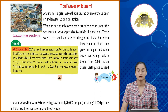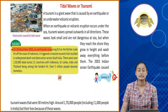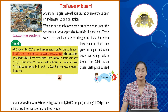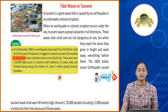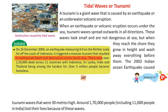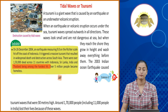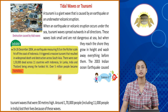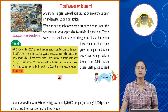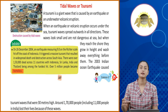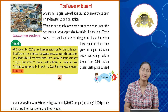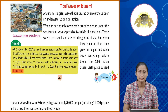Info bit: On 26th December 2004, an earthquake measuring 9.0 on the Richter scale hit off the coast of Indonesia. It triggered a massive tsunami that resulted in widespread death and destruction across South Asia. There were over 1,50,000 dead across 11 countries, with Indonesia, Sri Lanka, India and Thailand being among the hardest hit. Over 5 million people became homeless. 2004 mein jo earthquake ki wajah se tsunami aayi thi, uski wajah se 1,50,000 logon ki maut hui thi, jis mein 11 countries shaamil thi jaise Indonesia, Thailand, Sri Lanka aur India.